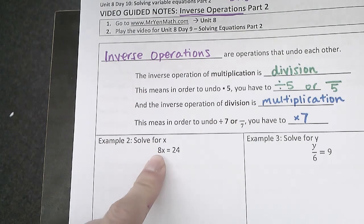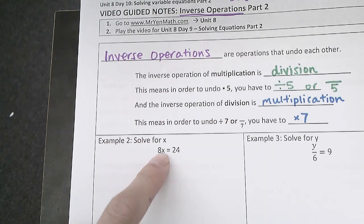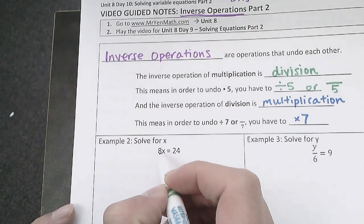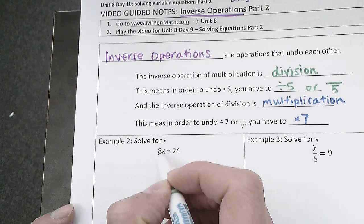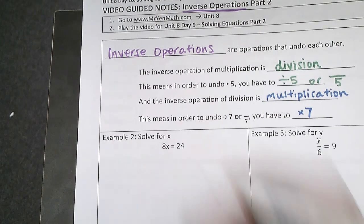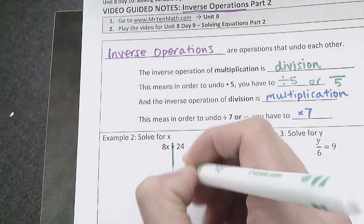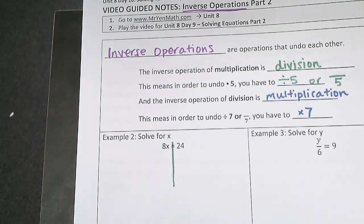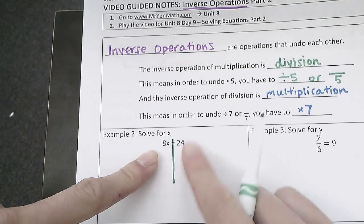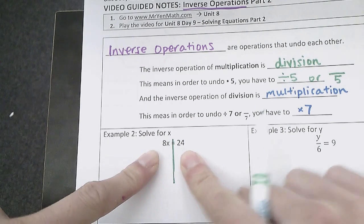So let's look at two examples here. First, when we want to solve for x, we have 8x equals 24. And remember, 8x is the same thing as 8 times x equals 24. So I'll draw my line down the middle of the equal sign so that I can remember that everything that happens on the left side also has to happen on the right side to keep it equal.